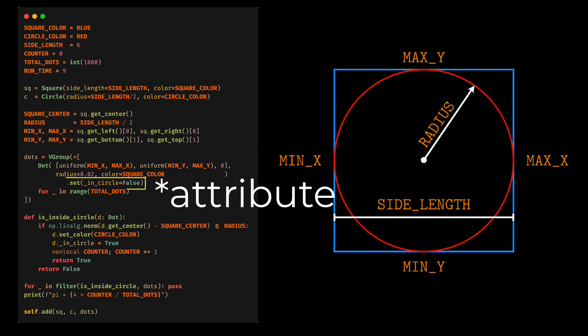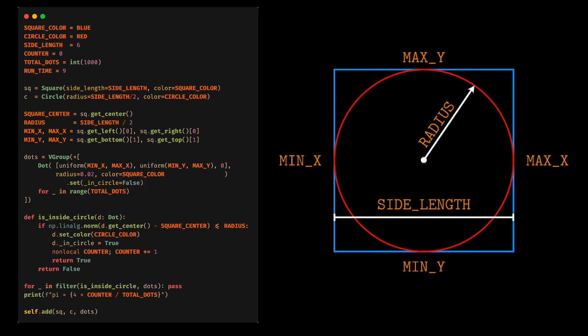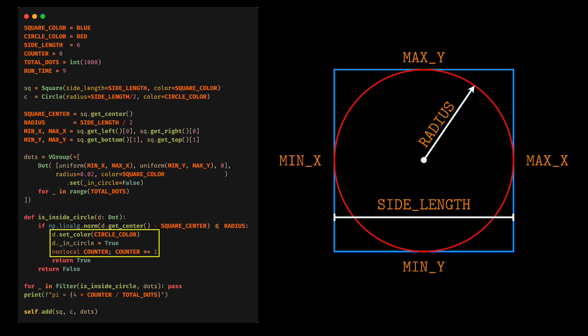I will define a parameter called 'encircle' that we will modify in the following function. We will calculate the distance from the point to the center, and if it is less than or equal to the radius of the circle, then the point is inside the circle. We will change the state of 'in_circle' and increment the counter. To simplify the code, I will use the filter function.